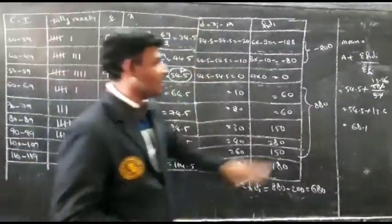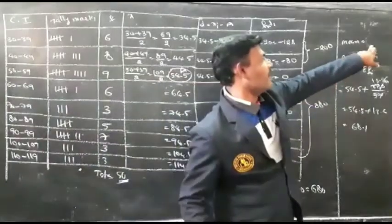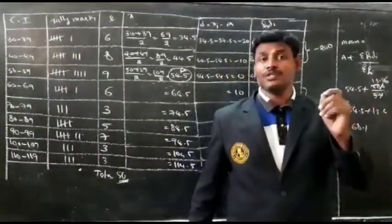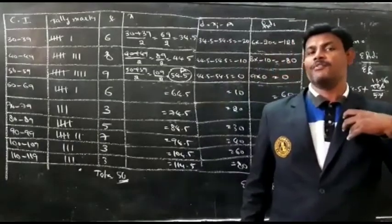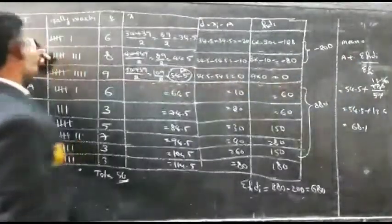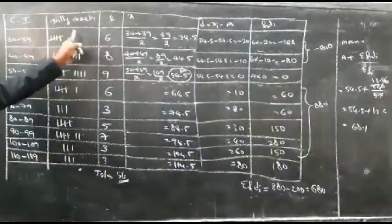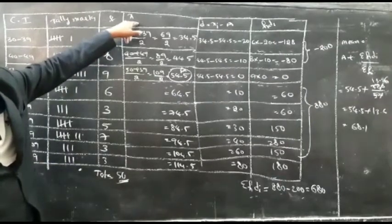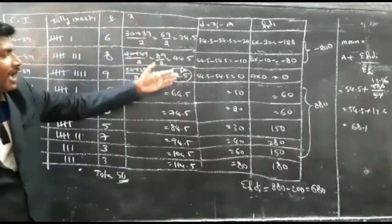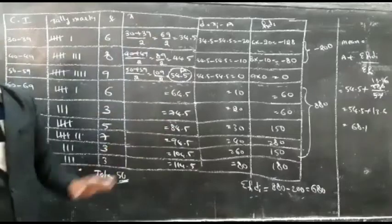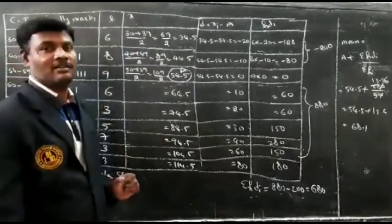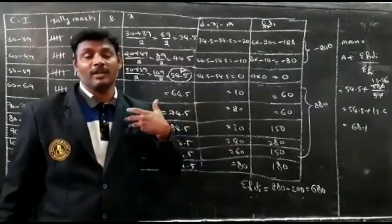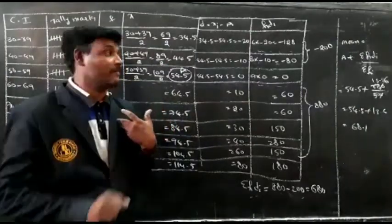The formula for the deviation method is: Mean = A plus Sigma FiDi divided by Sigma Fi. To use the deviation method, I need the value of A — the assumed mean. We already know the class interval, mid-values, and frequency.